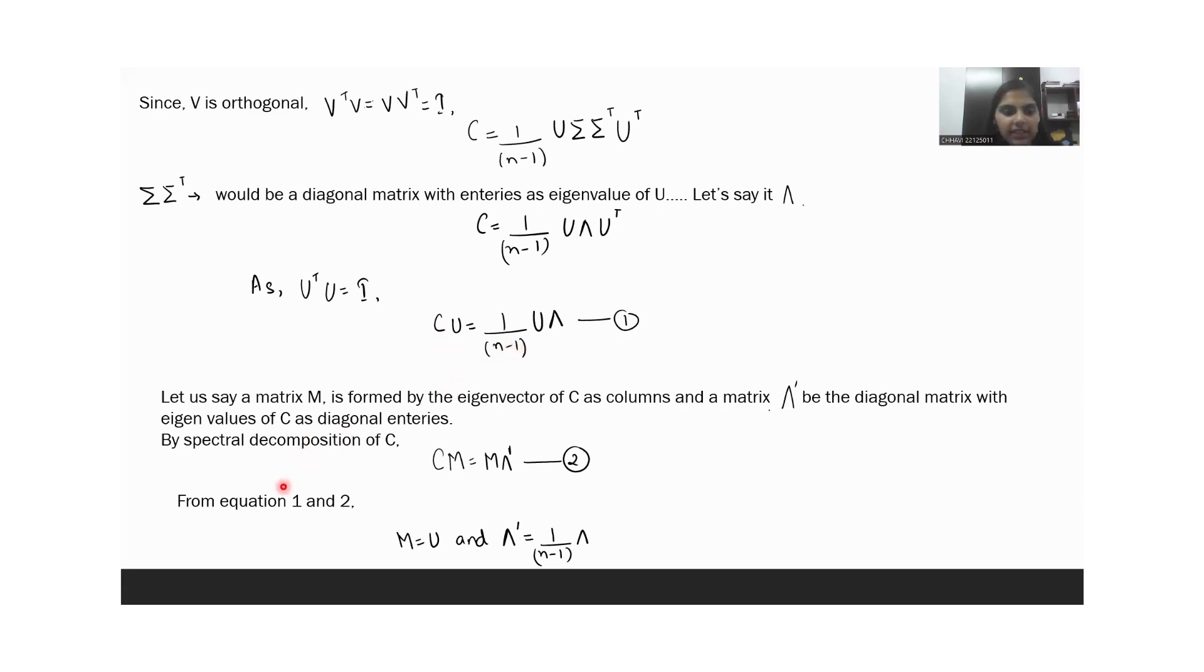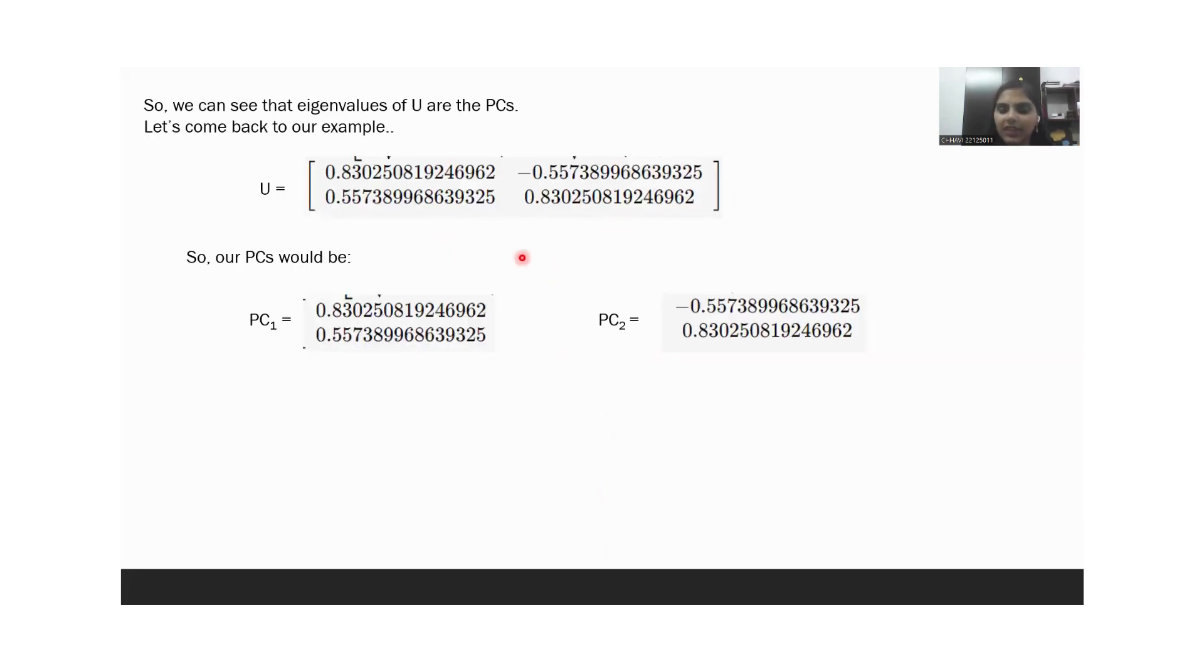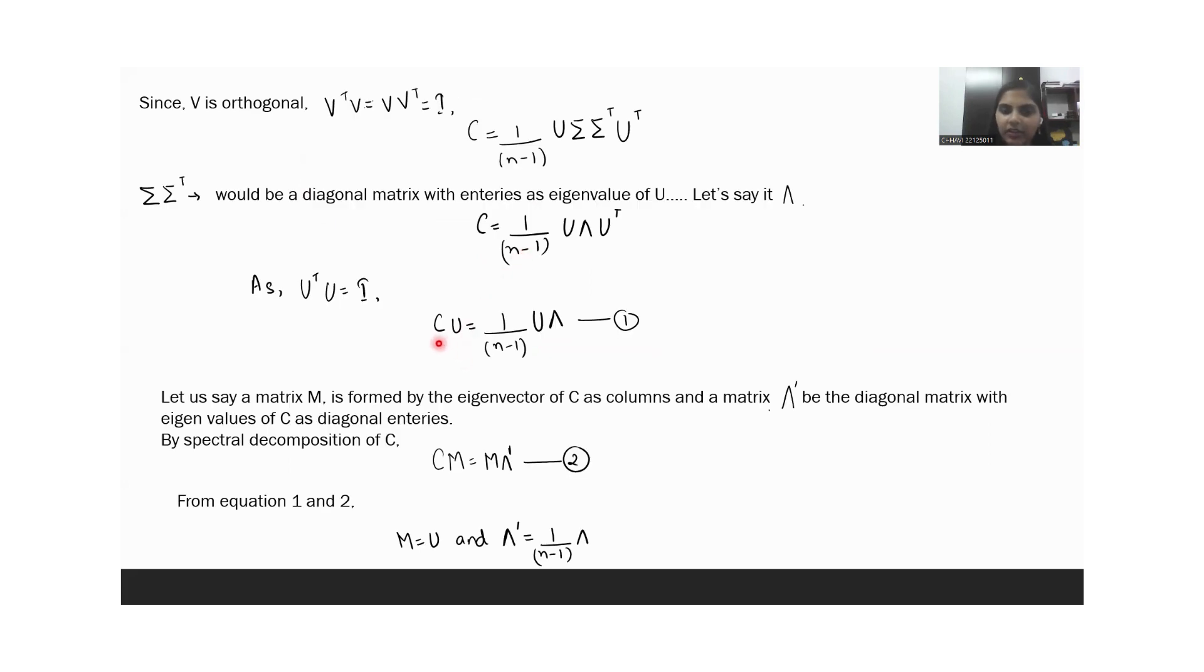So we can see that M is equal to U and lambda dash is equal to 1 by N minus 1 times lambda. So we can say that instead of finding the eigenvectors of C, we would go to the SVD and take the values that we have in the matrix U as our PCs.